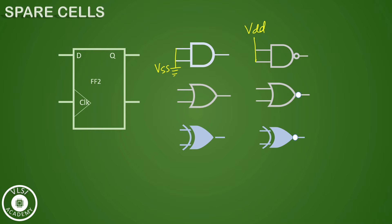Inputs cannot be left floating, as a floating input is actually prone to noise and this could result in unnecessary switching in the spare cells which leads to extra power dissipation. So sometimes it is asked in interviews: why are you tying the inputs? The reason for tying the inputs is that it can result in noise or power dissipation. That is why we are tying the inputs of spare cells.